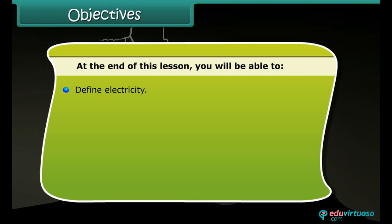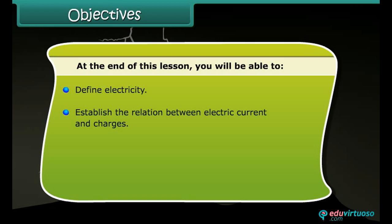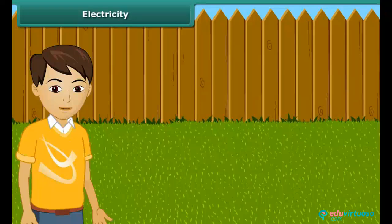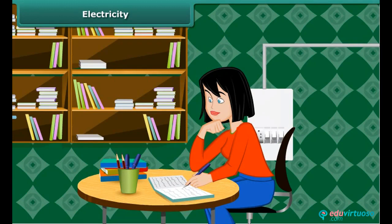Objectives: At the end of this lesson, you will be able to define electricity, establish the relation between electric current and charges, identify the two types of electricity, and define conductors and insulators.